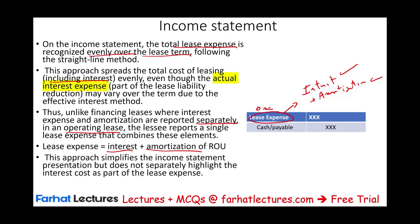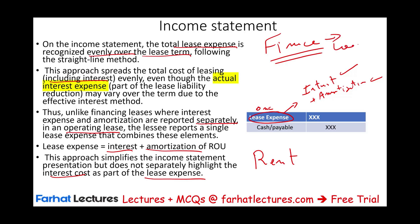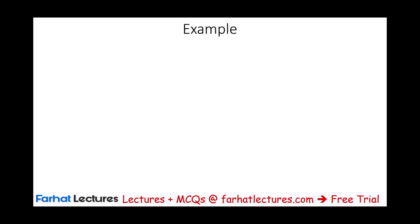This approach simplifies the income statement presentation but does not separate or highlight the interest cost as part of the lease expense. The reason is that an operating lease is considered a rent. Because it's considered a rent, interest should not be a factor, versus a finance lease which is considered a loan — and if we have a loan, we show the interest separately. So in an operating lease, we ignore the separate interest component because it's a rent expense, not a loan.